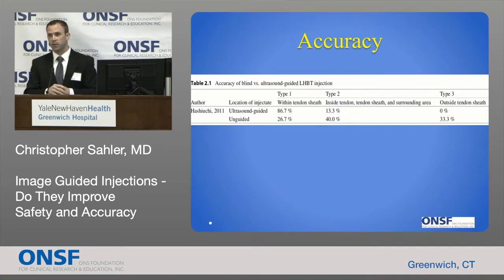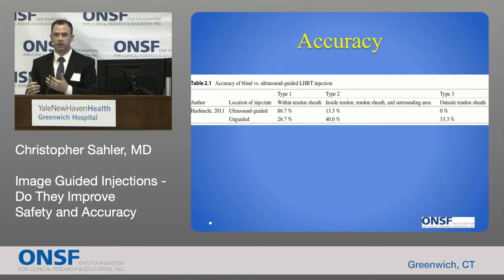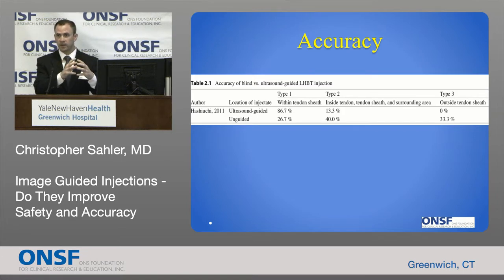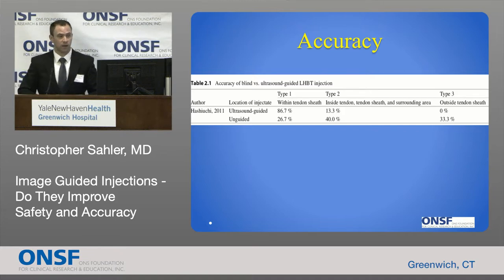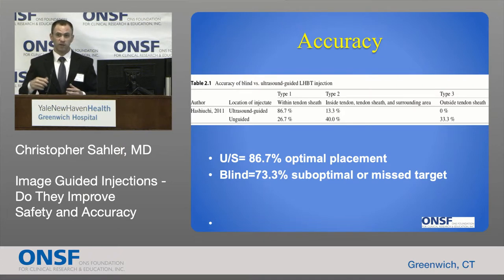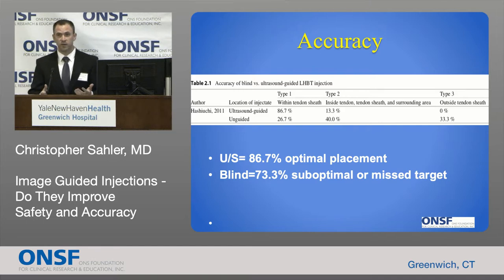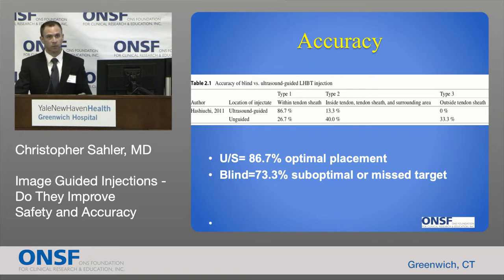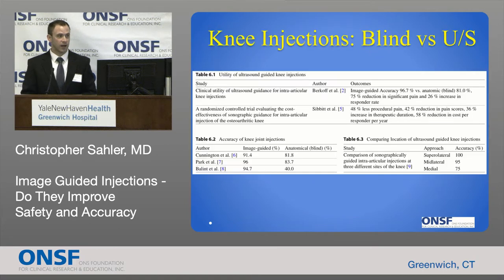Accuracy-wise, this can be applied to every single body part. For this biceps tendon sheath injection, studies show: using ultrasound, at least 86% of the time it's perfect placement. If you just do it blind, you're going to miss or get it in the tendon — which you don't want — 73% of the time. So you're much more accurate with ultrasound. There's essentially no reason not to use it. Even for the knee, which seems big enough to hit easily, trained orthopedists doing it blind may only get into the joint 80-90% of the time, whereas with ultrasound it's close to 100%.